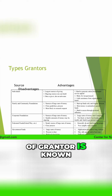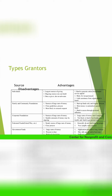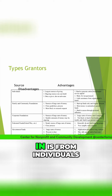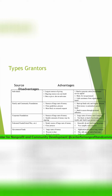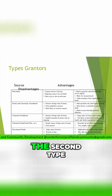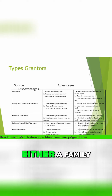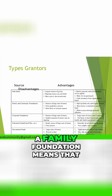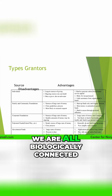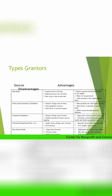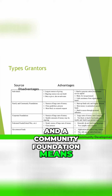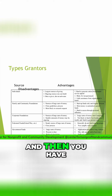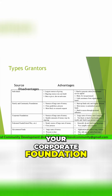The first type of grantor is known as an individual. This is by far the largest amount of money that comes in — from individuals like you and I. The second type of funder is either a family or a community foundation. A family foundation means that we are all biologically connected, and a community foundation means that it's focused on a particular community. And then you have your corporate foundation.